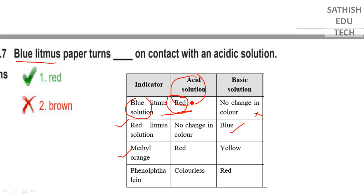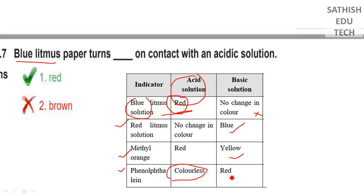In an acid solution, methyl orange will be red color. If you use a basic solution, it will be yellow color. For phenolphthalein, in an acid solution it will be colorless. In a basic solution, it will be red color.